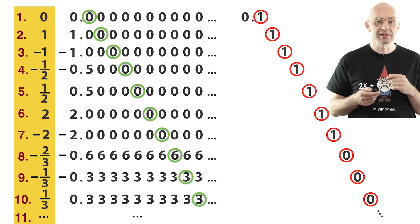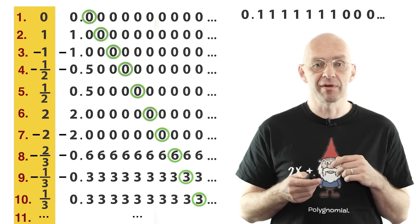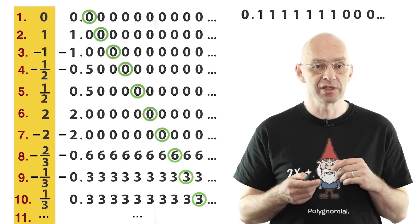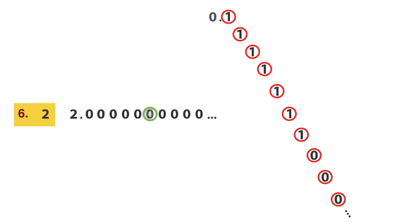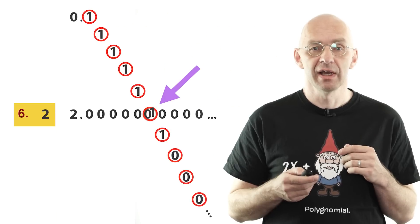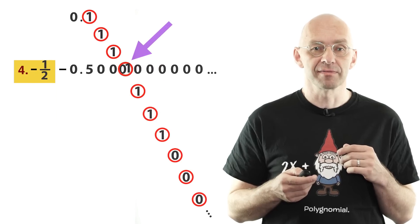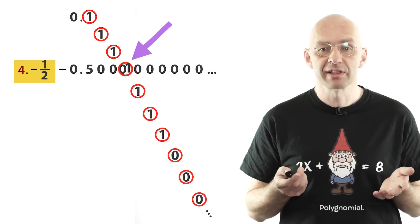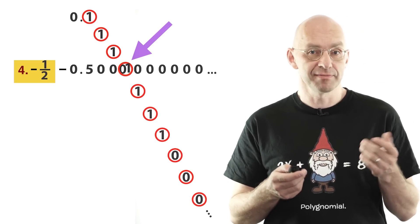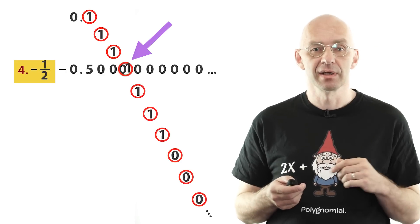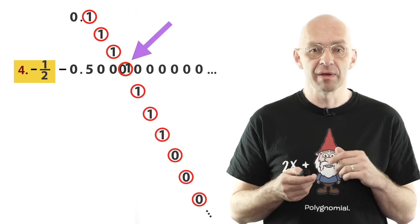Here we change all the zeros to ones and all the other digits to zeros. The new number that we get this way differs from every number on our list in one position each. For example, it differs from the sixth number on the list in the sixth digit. It differs from the fifth number in the fifth digit, and so on. And this means that the new number is really different from all the numbers we've listed. But we've listed all rational numbers, and therefore the new number has to be irrational.